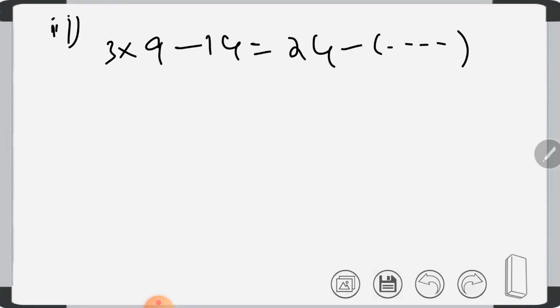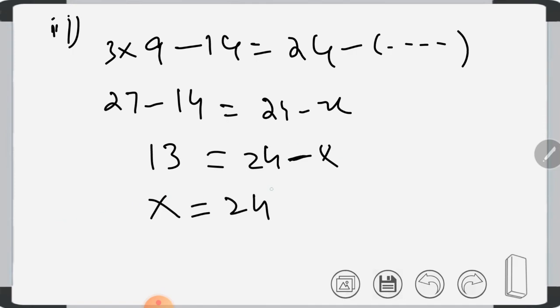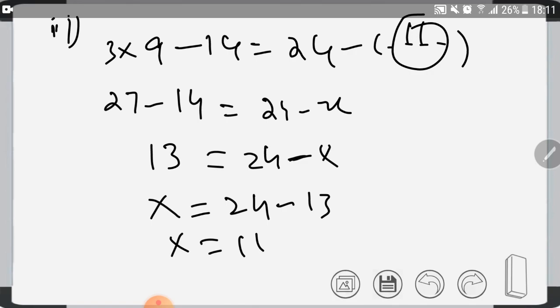First we will multiply. 3 times 9 is 27, minus 14 is equal to 24 minus X. So 27 minus 14 equals 13, which equals 24 minus X. Bring X toward this side, it will come positive, and 24 will subtract from 13. X is equal to 11. If you put 11 here you will get both sides equivalent.